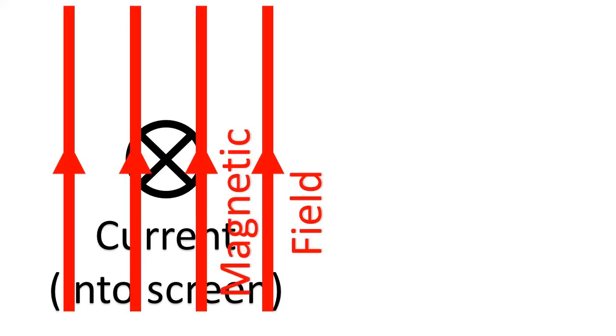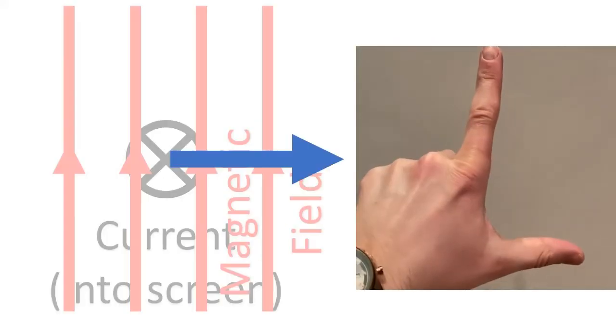If a wire carrying conventional current into the screen is in a magnetic field flowing upward on the screen as you look at it, the direction of the force would be to the right.